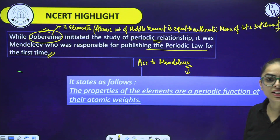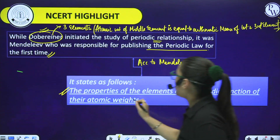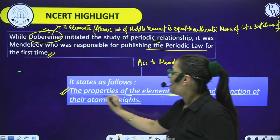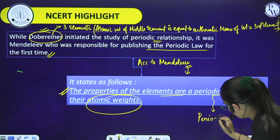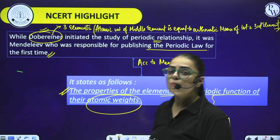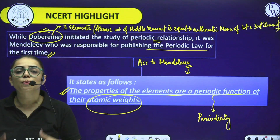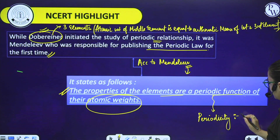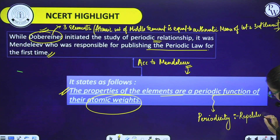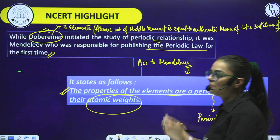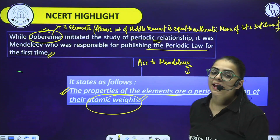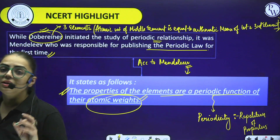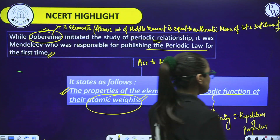According to Mendeleev, the properties of elements are a periodic function of atomic weight. What is periodicity? It is basically the repetition of properties - the repetition of physical and chemical properties. So if you place elements in the same group, there is a repetition of properties in that group. They are a periodic function of their atomic weight - meaning it only depends upon atomic weight.